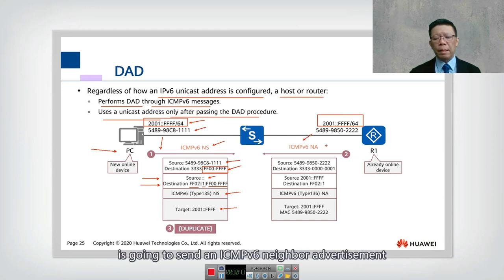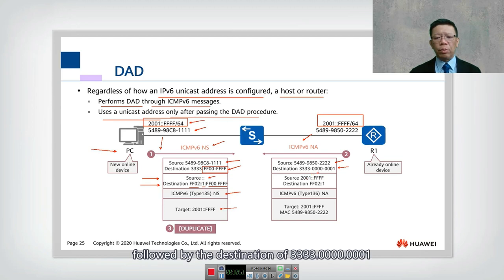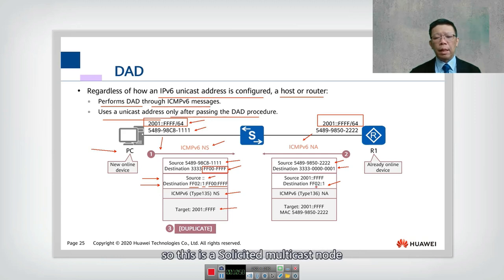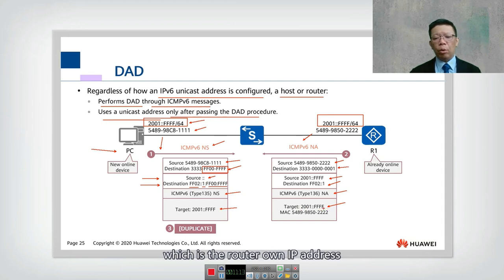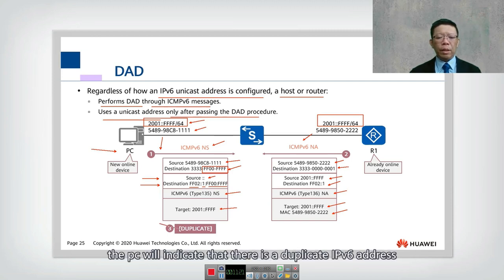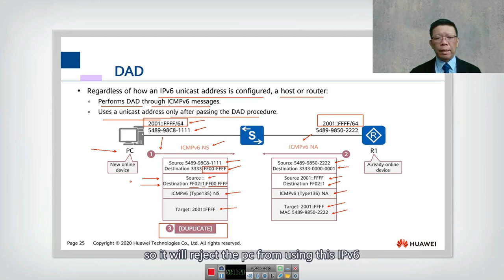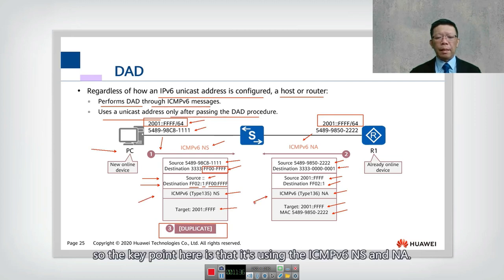Upon receiving the Neighbor Solicitation, the router sends back an ICMPv6 Neighbor Advertisement (type 136). The source is the router's own MAC address and the destination maps to ff02::1 at Layer 3, which is the all-nodes multicast. The Neighbor Advertisement contains the router's own IP address 2001::ffff as the target, along with the router's MAC address. When this information reaches the PC, the PC detects a duplicate IPv6 address and rejects use of that address. The key mechanism uses ICMPv6 NS and NA messages.